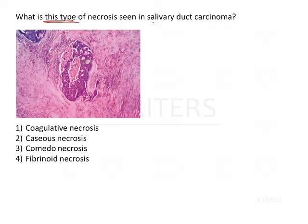The question is: what is this type of necrosis seen in salivary duct carcinoma? We are aware of the different types of necrosis. Necrosis is basically a form of cell death — it is an inflammatory process and the cells die off in the form of necrosis. There are different types of necrosis, like caseous necrosis, coagulative necrosis, and so on.